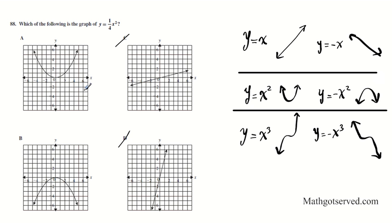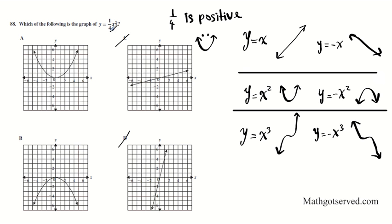Since the power is 2, we're dealing with the quadratic family, so the linear options are eliminated. The answer is either A or B. Now look at the coefficient of x squared — it's one-fourth, which is positive. Since the leading coefficient is positive, the parabola opens upward. So the sad, downward-facing parabola is wrong — we need the happy, upward-opening one. The answer for question 88 is option A.